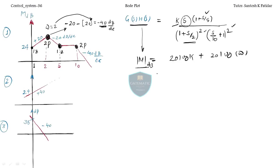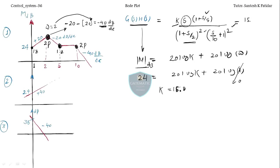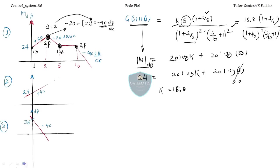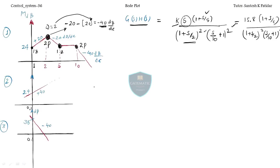The magnitude given is 24 dB. So: 24 = 20 log k + 20 log(1). Since log(1) = 0, the final k value is 15.8. So the transfer function for this question is: 15.8 · (1 + s/5) / [(1 + s/2)² · (1 + s/10)]. That's the answer for question one.